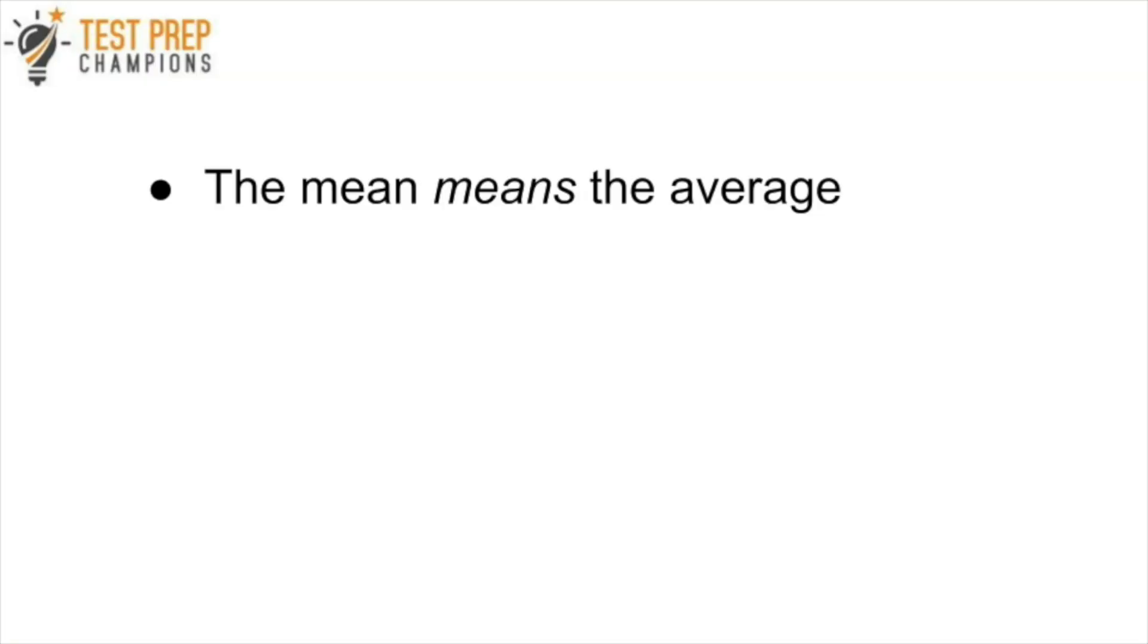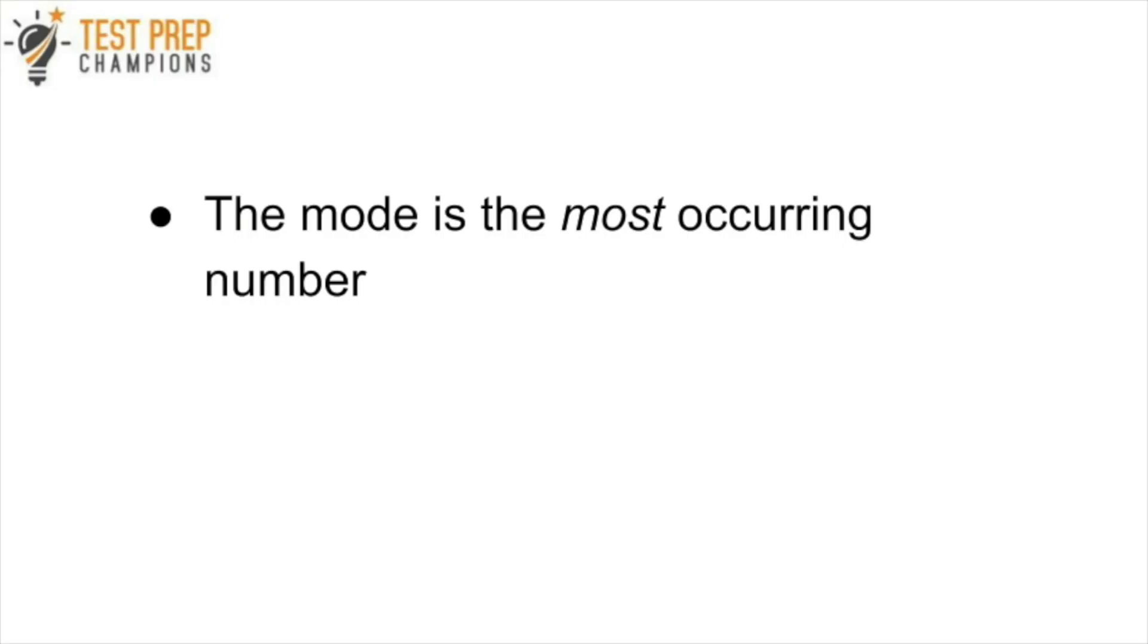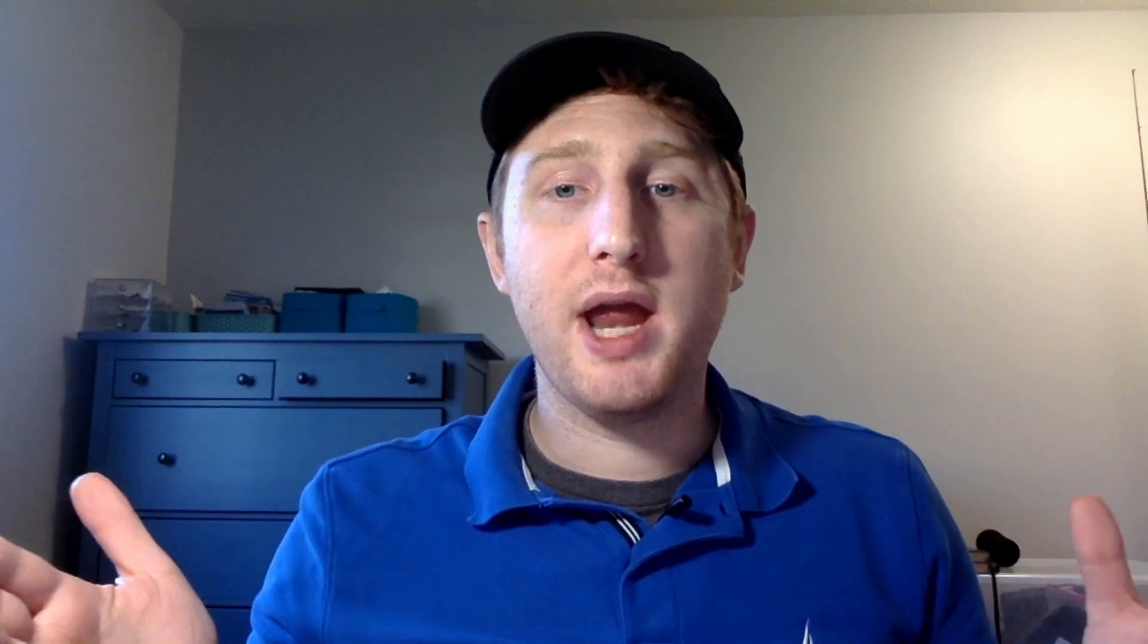It's important to know how to beat mean, median, mode and range questions. So the mean simply means the average. The median is the middle number in a set of numbers once you've put the numbers in order from smallest to largest. Now the mode is the most occurring number in the data set. So you'd simply find which number shows up the most times. And the range is simply subtracting the smallest number from the biggest number.